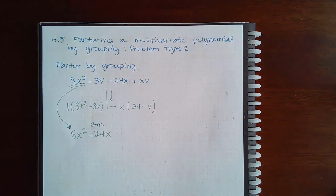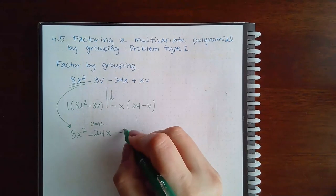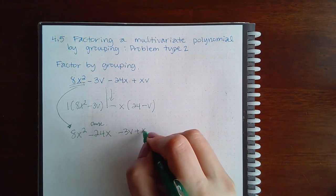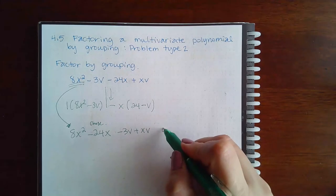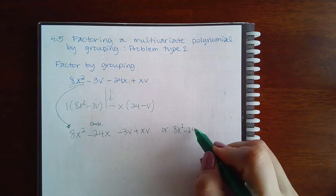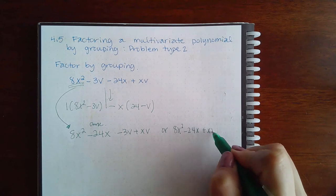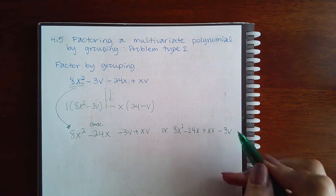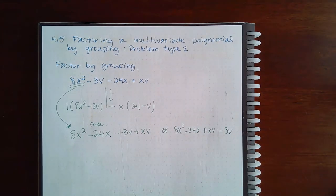The problem is the last two terms—is it gonna be the negative 3v plus the xv, or is it going to be the positive xv first and then the negative 3v? We won't know until we do the grouping part of the problem.